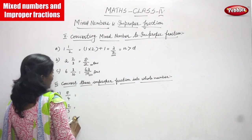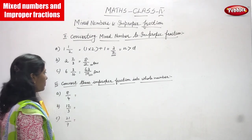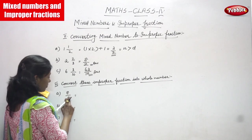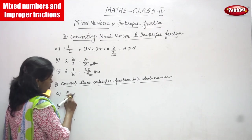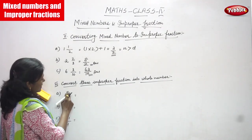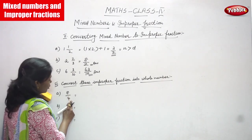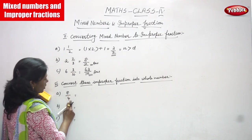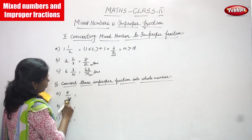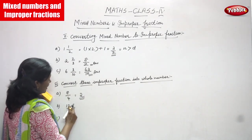Next, convert these improper fractions into whole numbers. 8 is the numerator and 4 is the denominator. 8 is divided by 4. You can get 2 — so the answer is 2. It is a whole number.